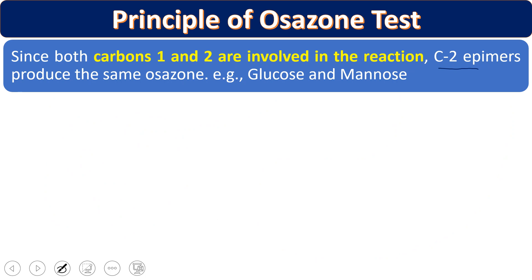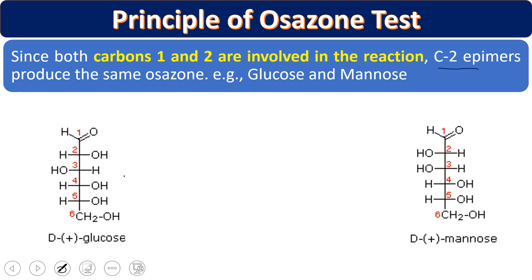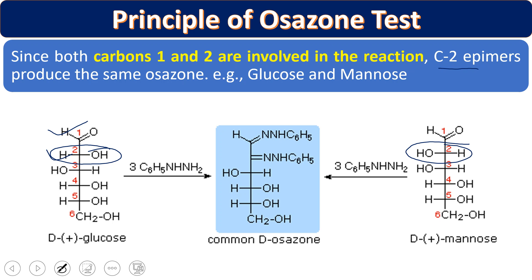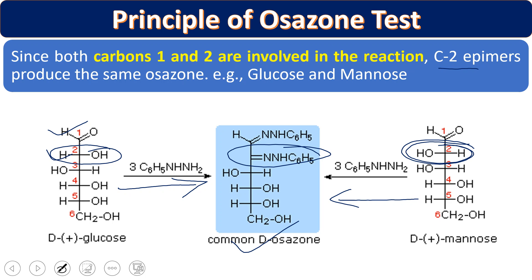Since only carbon number one and carbon number two are involved in the reactions, any sugars that are C2 epimers — differing only at carbon number two — will give the same type of osazone. For example, glucose and mannose: everything else is the same and they differ only at carbon two. Because carbon one and two react with phenylhydrazine, both glucose and mannose give the same osazone and same needle-shaped crystal.